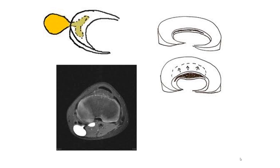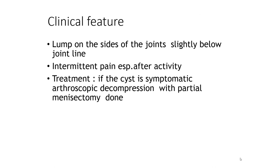This picture shows how the meniscal cyst develops and how fluid escapes beyond the rim of the meniscus. The clinical picture is a lump below the joint line, usually on the lateral side, with intermittent pain after activity. Treatment is usually by arthroscopic decompression of the synovial tissue and closure of the mouth of the cyst.